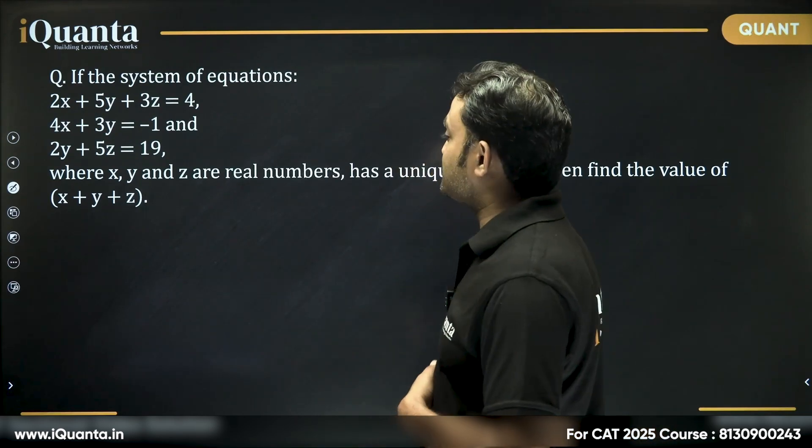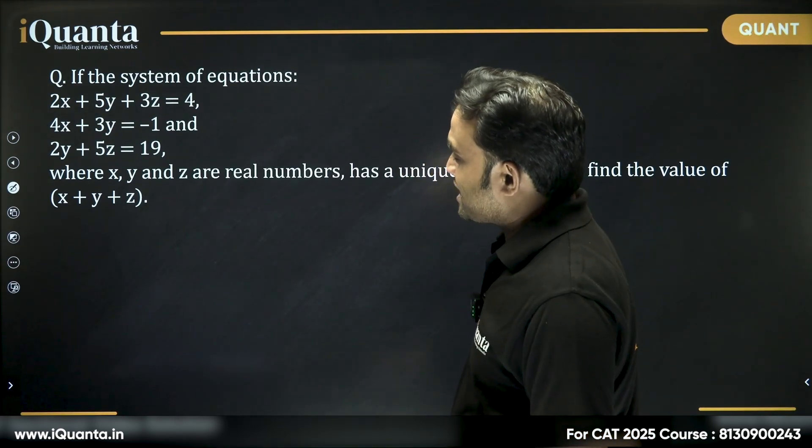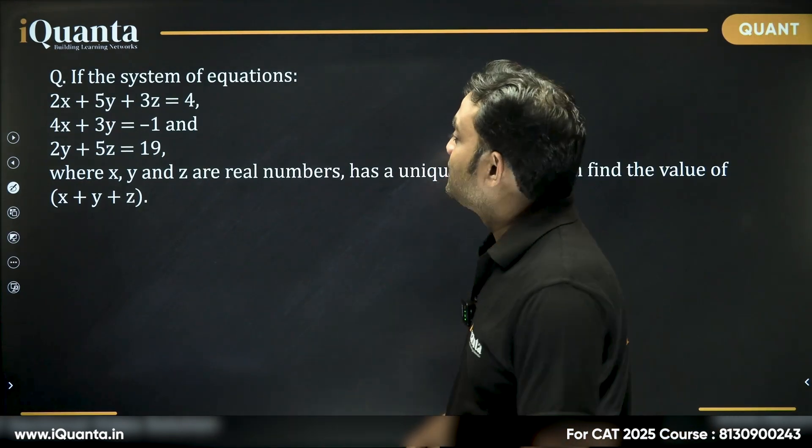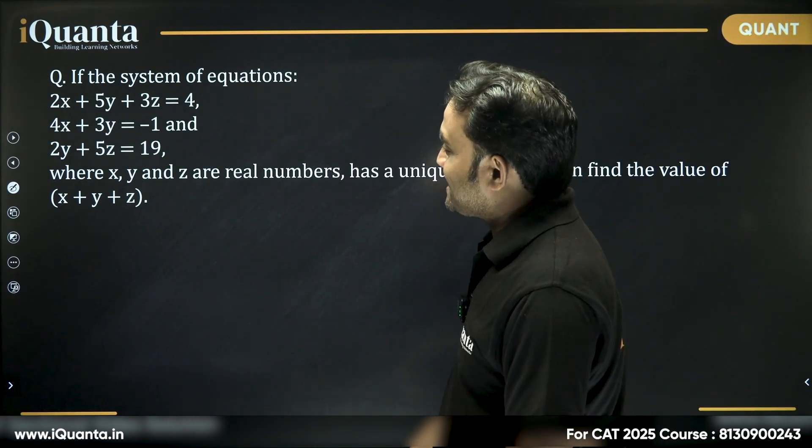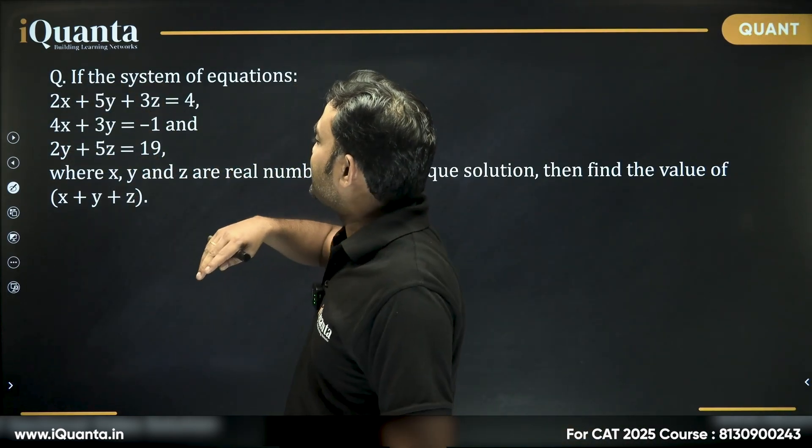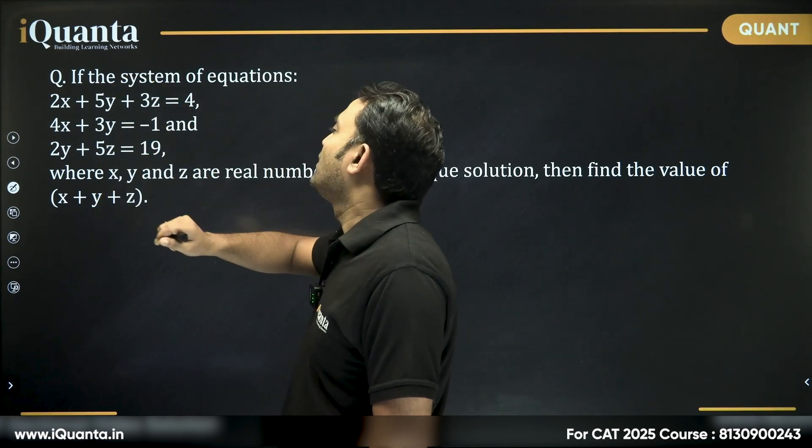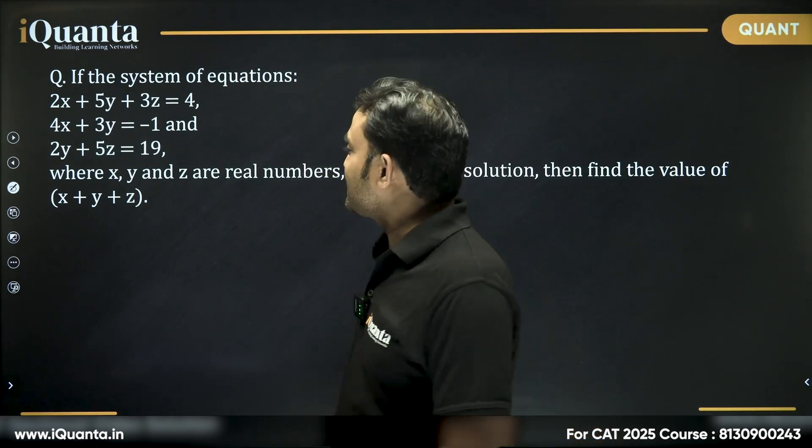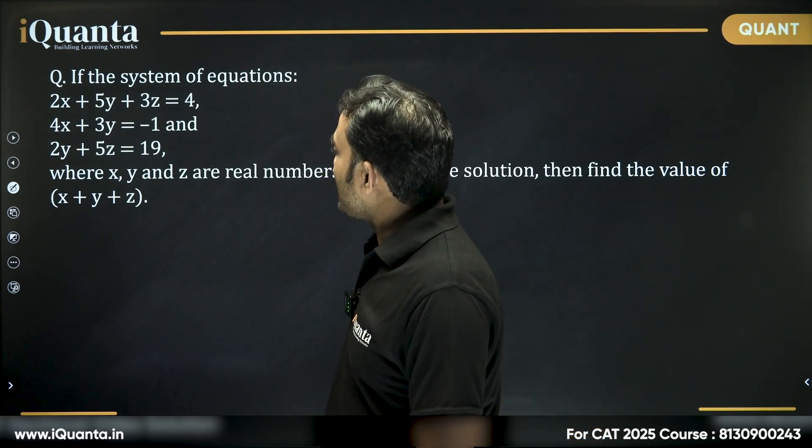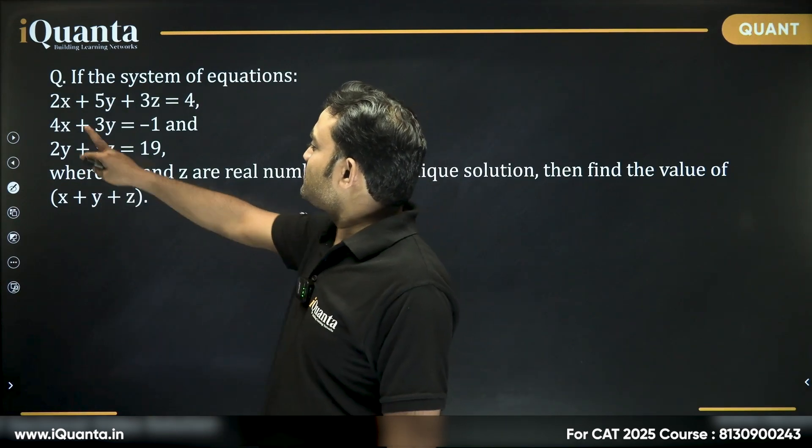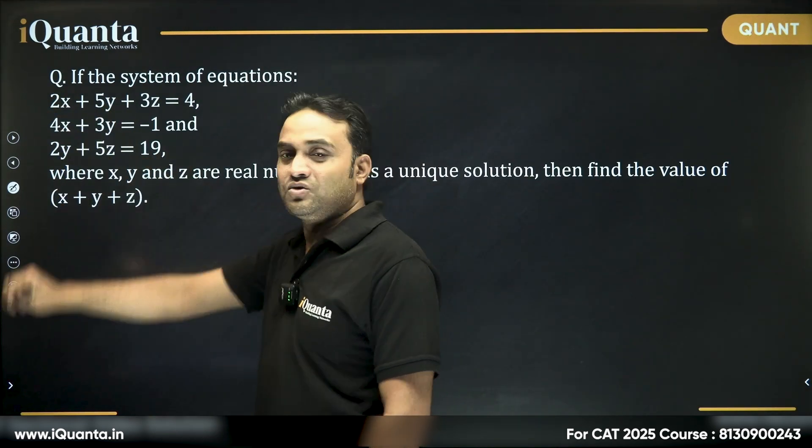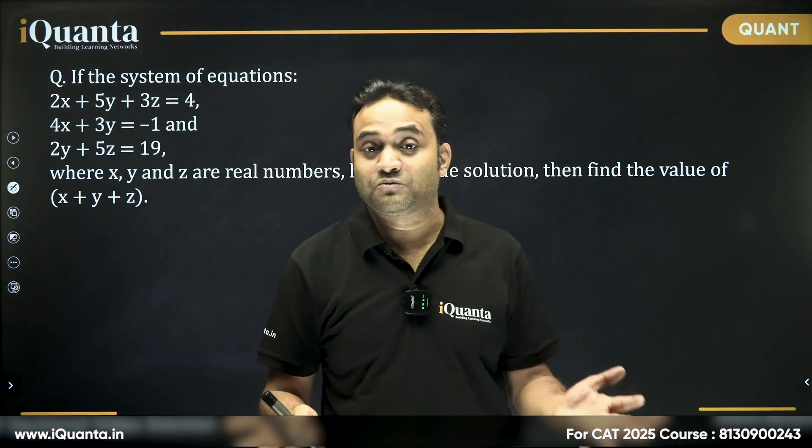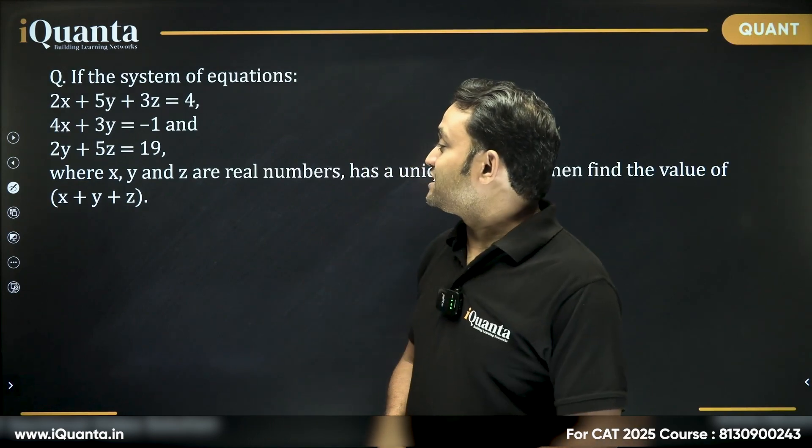We need to find the value of (x + y + z). First I will check if there's a way I can find the value of (x + y + z) directly. If I'm adding all the equations, it will become 8x, 13y... no, it does not look like that will work. If I take some of these two and subtract this, no. I'm not getting any easy way to find (x + y + z). Looks like we will have to find the values of x, y, and z individually. Let us try this.